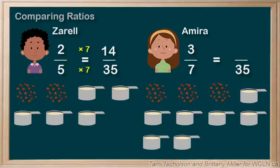For 3 over 7, what times 7 equals 35? 5. So for 3 over 7 we need to multiply 5 on the top and 5 on the bottom. We get 15 over 35.